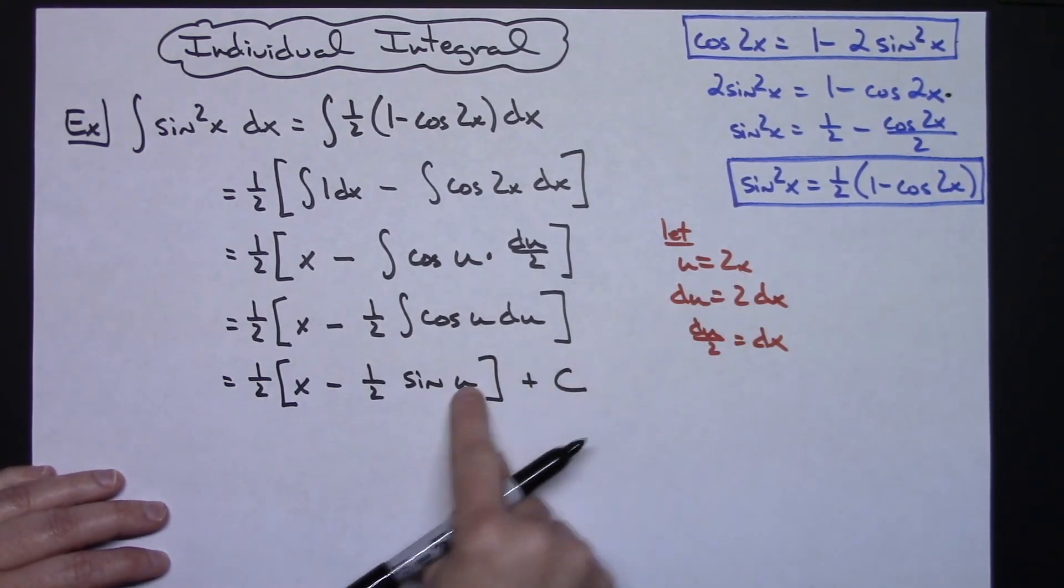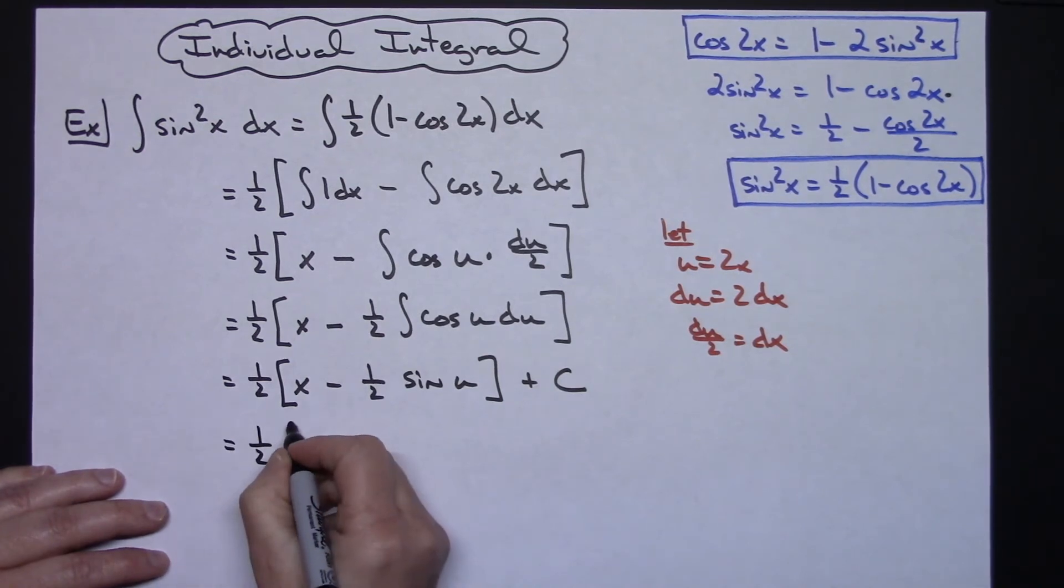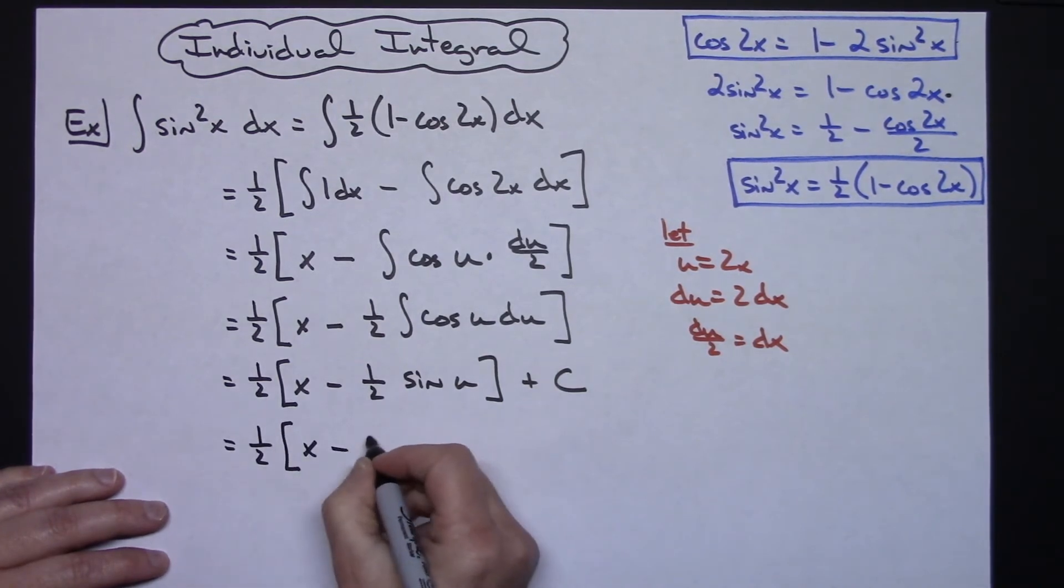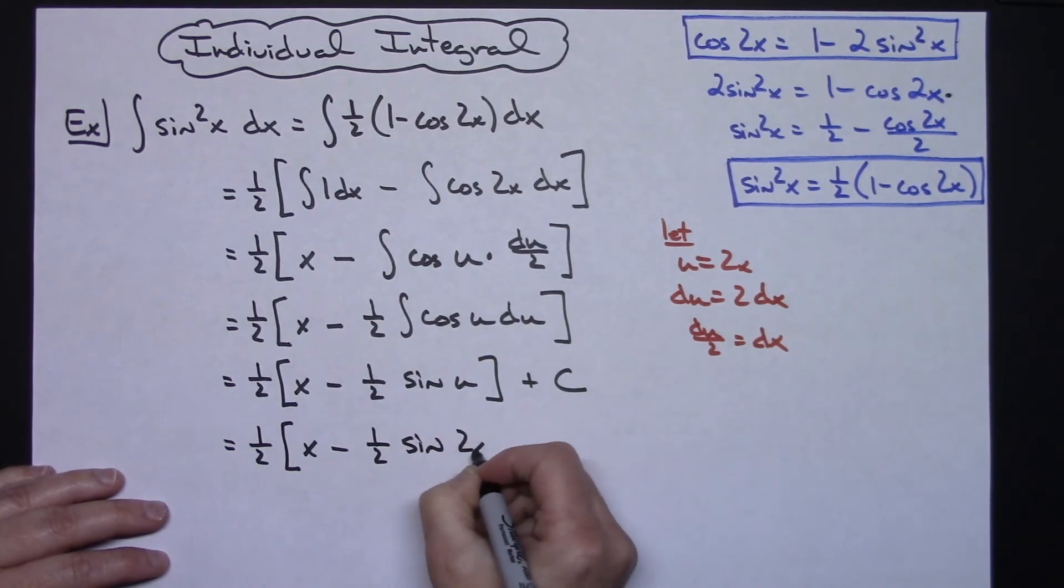I need to replace u with what it equals. So I'll have a 1 half times the quantity x minus 1 half sine 2x.